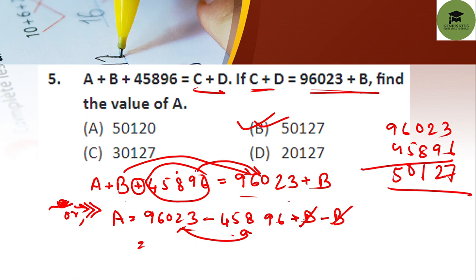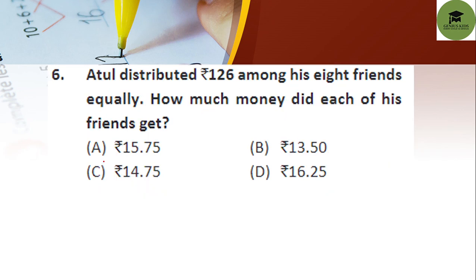Remember: when you move any value from the left-hand side to the right-hand side after the equals sign, the sign changes — plus becomes minus, and minus becomes plus. Keep that in mind.